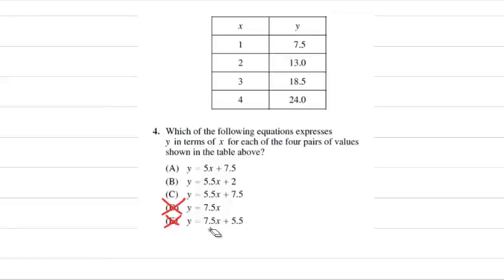Choice C. If X were to equal 1, 5.5 times 1 plus 7.5, Y is supposed to come out to 7.5, and here it's coming out to 13, which is not going to work. We're quickly just going through our answer choices until we find the one that works for us.